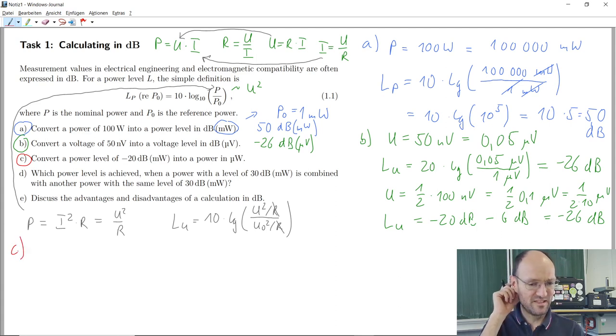So for subtask C, now we have a power level of minus 20 dBm, or dBmw, and we should convert this into a power given in microwatt.